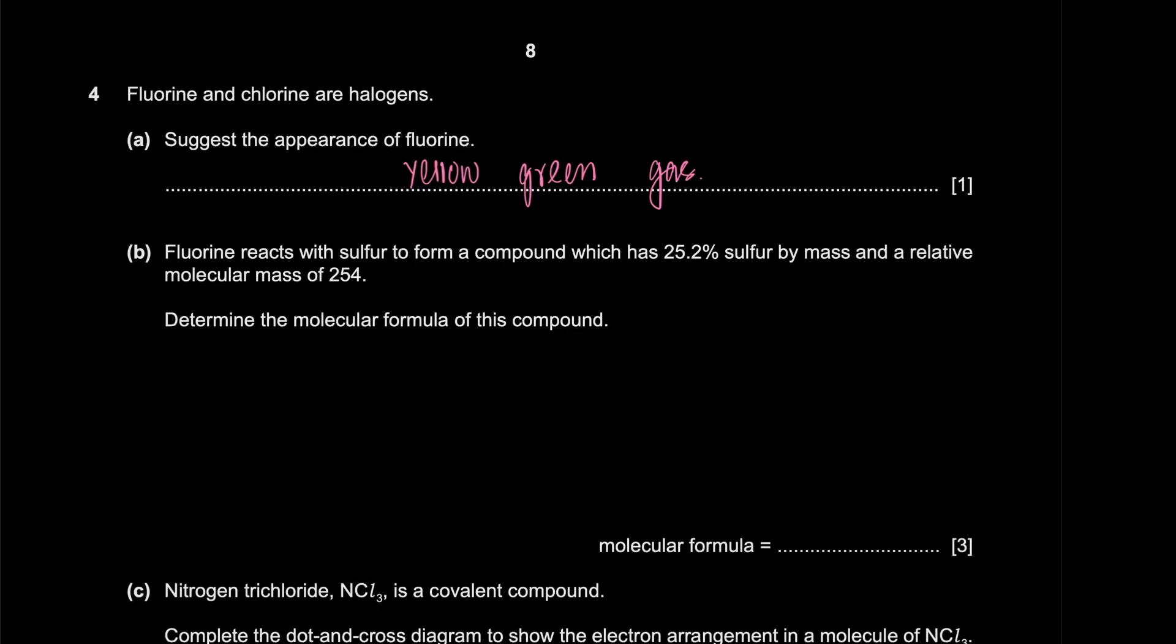Fluorine reacts with sulfur to form a compound that has 25.2% sulfur by mass. Determine the molecular formula of this compound. And the way I like to do this question is more ratios than anything else. So sulfur has by mass 25.2. And this would be 74.8. And so these are the masses. How do I know it's 74.8? Well, if sulfur is 25.2, the rest of the 100% should be 74.8, which belongs to fluorine. Now, I know their masses. How do I know their count? Count would help me figure out their ratios. So divide by the MR. This is 32. And fluorine is 19.